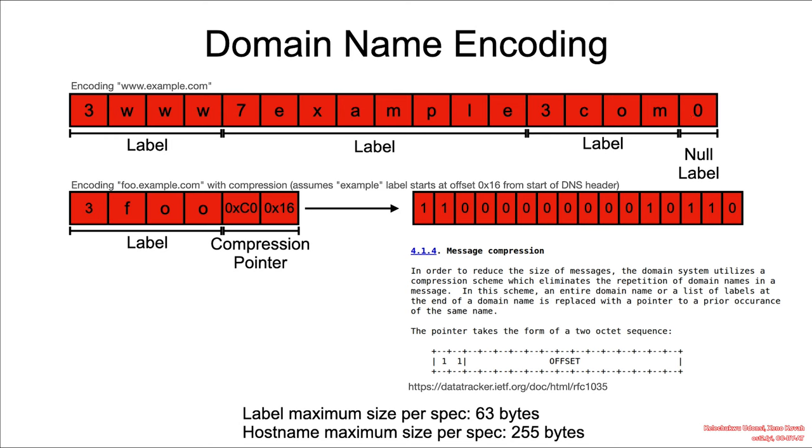Keep in mind that when reading the label, starting with the length, we either encounter the length or we encounter a compression pointer. Well, how do we know which has been encountered?